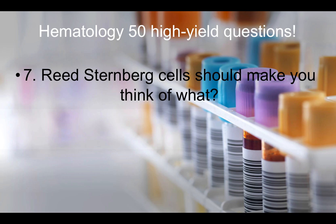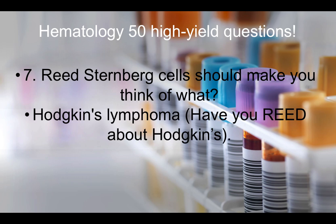Question number seven: Reed-Sternberg cells should make you think of what? When it comes to Reed-Sternberg cells, you should be thinking about Hodgkin's lymphoma. The mnemonic I use is 'Have you read about Hodgkin's?' So if I'm thinking about Reed-Sternberg cells, I think: have you read about Hodgkin's disease? Reed-Sternberg cells — Hodgkin's lymphoma.